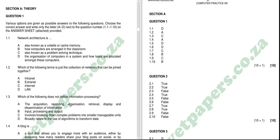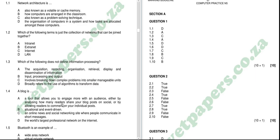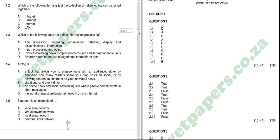Number three: 'Which of the following does not define information processing?' The correct answer — the odd one out that does not define information processing — involves breaking down complex problems into smaller manageable units. Number four: a blog — A is the correct answer — a tool that allows you to engage more with an audience, either by analyzing how many readers share your blog posts on social, or by allowing readers to comment on your individual posts.